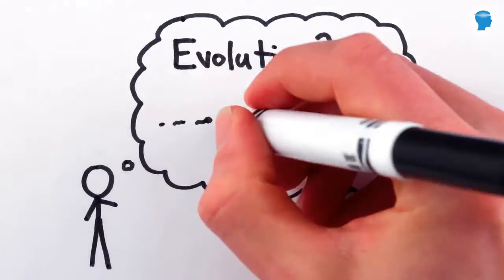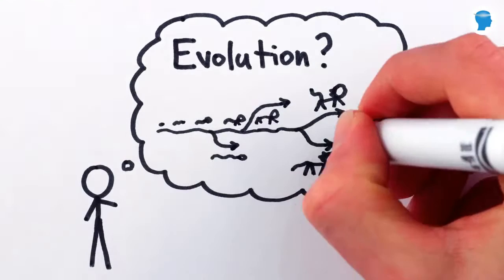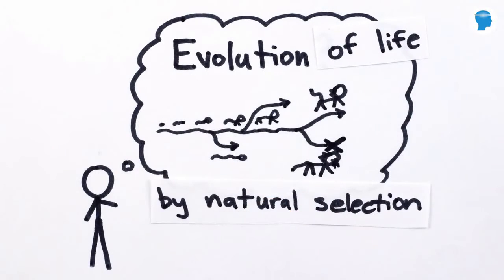Most of us hear the word evolution and think of the process by which species change and adapt and maybe turn into other species or go extinct, but that's specifically the evolution of lifeforms by means of natural selection.